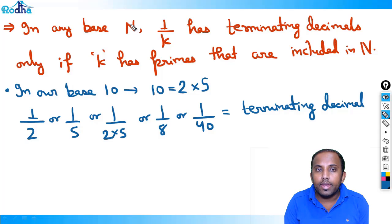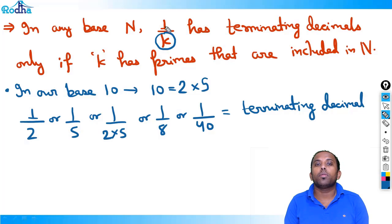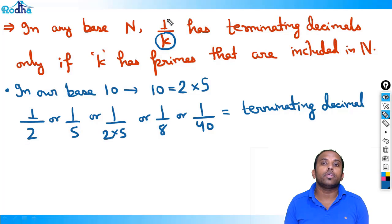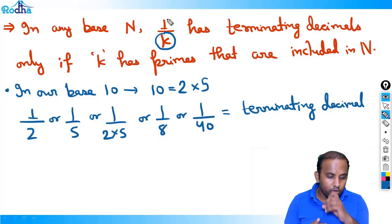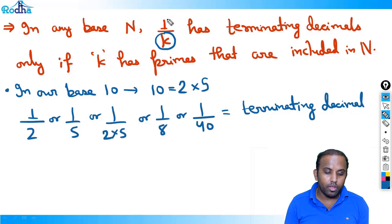So in any base n, if k has primes that are included in n, then 1/k will have terminating decimals. Otherwise it will be non-terminating. Using this concept you can solve some good questions.